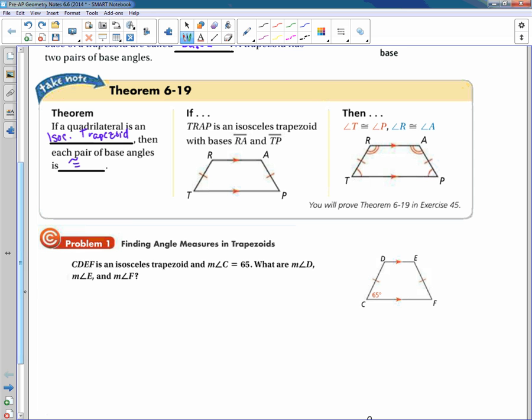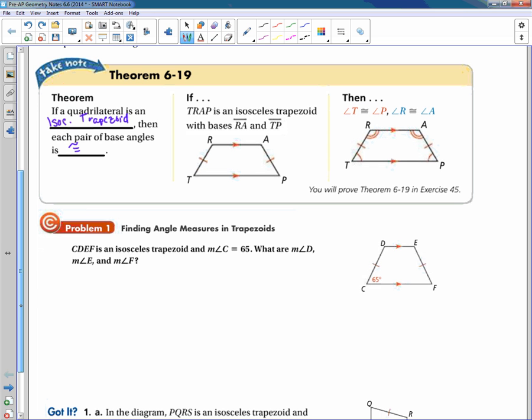So then the next thing we want to talk about is how do we find those angle measurements? Well, if we look at this one, we are already given that this angle right here is 65. So what's going to be the congruent base angle to angle C? Angle F. So this one's also going to be 65. Good.